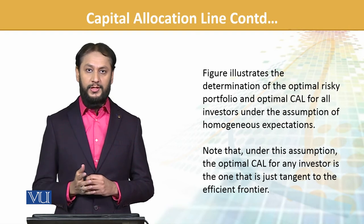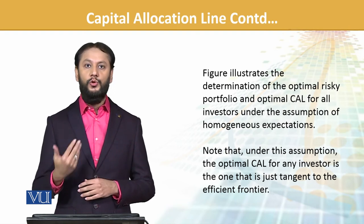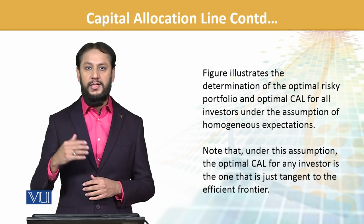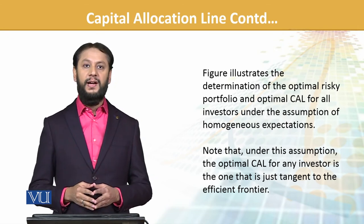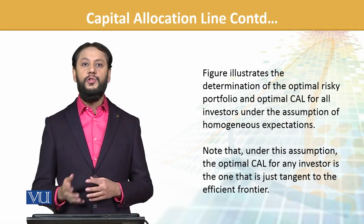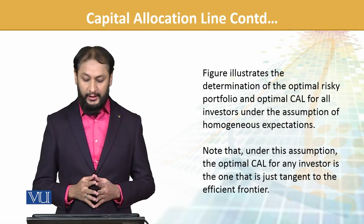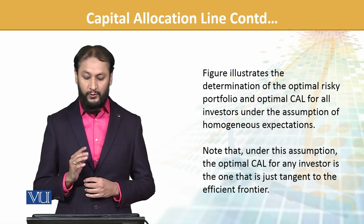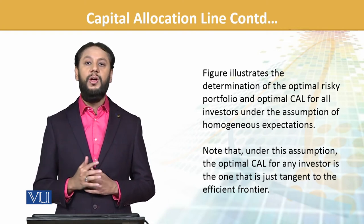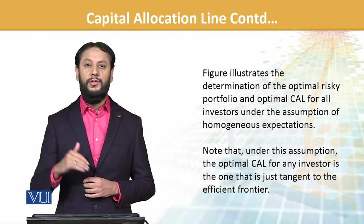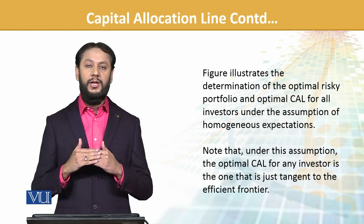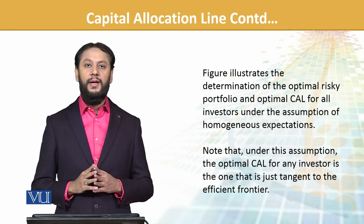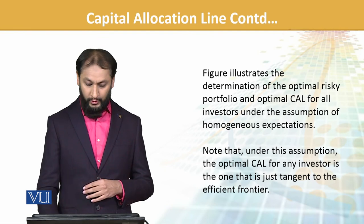When we have homogenous expectation, instead of different CALs — A, B, C — under this assumption the optimal CAL for investors is the one that is tangent to the efficient frontier. The CAL that touches the efficient frontier is the best possible and optimal for all. Depending on their preference for risk and return, their indifference, investors may choose different weights.